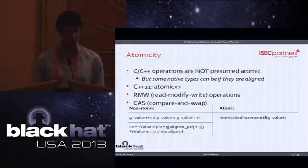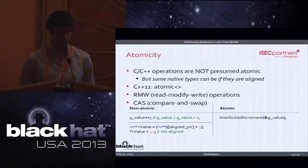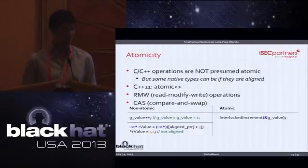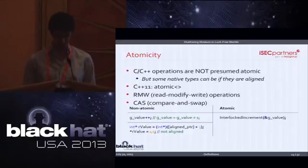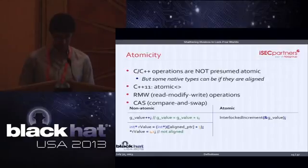Another example of a non-atomic operation is a simple increment, which actually uses three instructions: a load, an increment, and a store — so this cannot be atomic. To be atomic, you need to either use the atomic keyword in C++11 and use read-modify-write operations, which usually allow performing several basic operations that will appear as atomic.